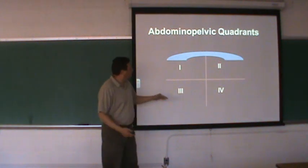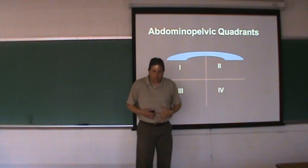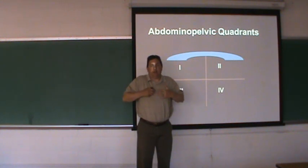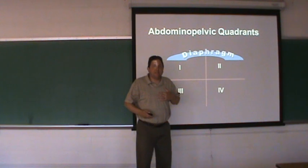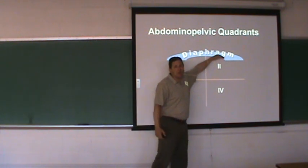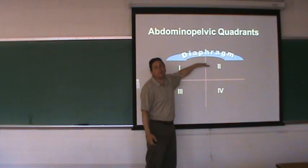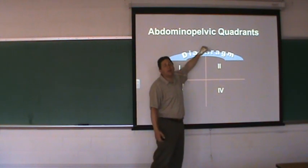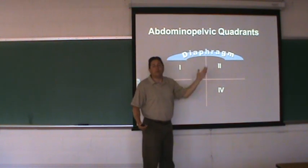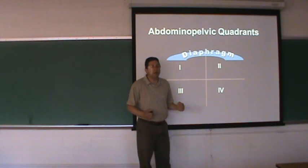The blue arc here separates the abdominal cavity — what we usually call the abdomen — from the thoracic cavity up here where the heart and lungs are. That is the diaphragm. It is a muscle of inspiration. When the diaphragm pulls down, air goes in; when the diaphragm relaxes, air goes out.